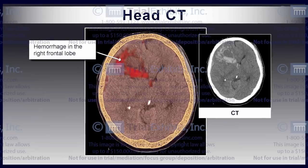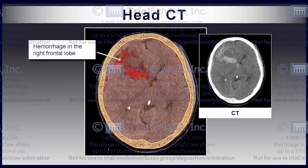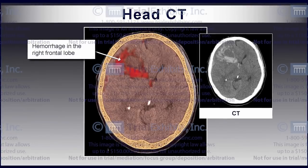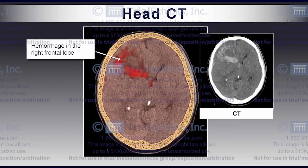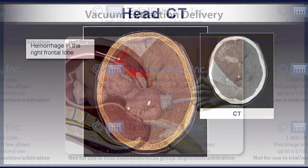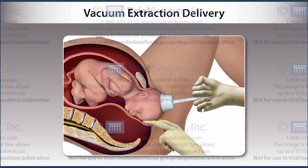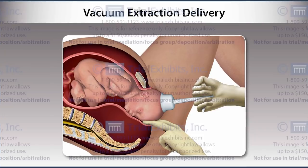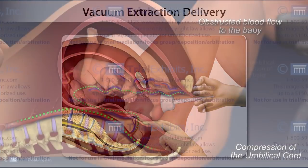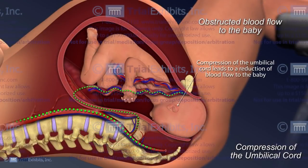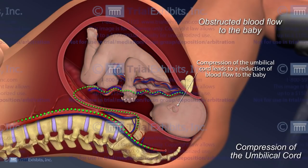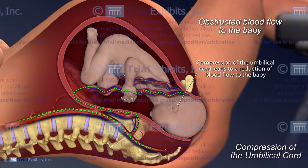In this case, it was claimed that the errors committed by the doctor during delivery of this child resulted in permanent brain damage. Specifically, the claim was that the brain was injured during the use of a vacuum extractor. Trial Exhibits was asked to create a presentation of an alternate theory to show that the injury of this baby occurred much earlier due to umbilical cord compression during the mother's contractions.